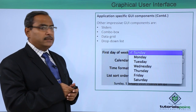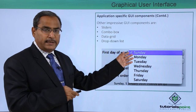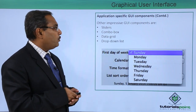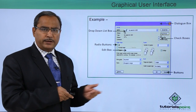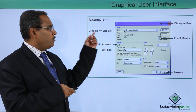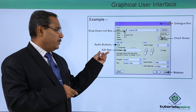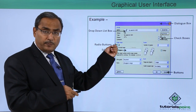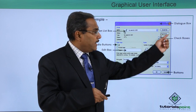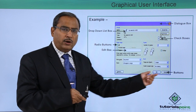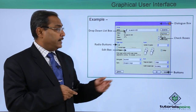Other GUI components include sliders, combo box, data grid, drop-down list, and others. A common example is the print dialog window in Windows environment, which contains a drop-down list, radio buttons for selecting pages to print, an edit or text box to specify a page range, check boxes for multiple selections, and OK or Cancel buttons. This sample window demonstrates multiple GUI components together.